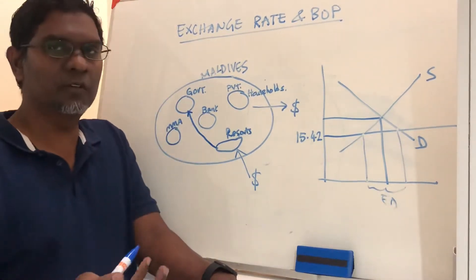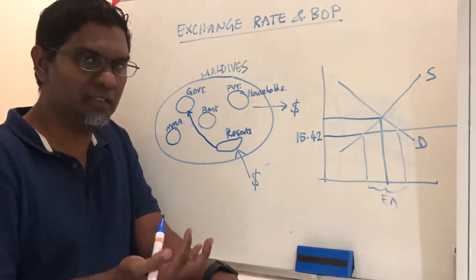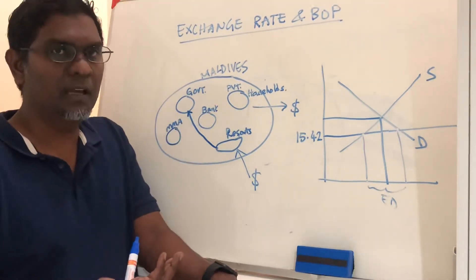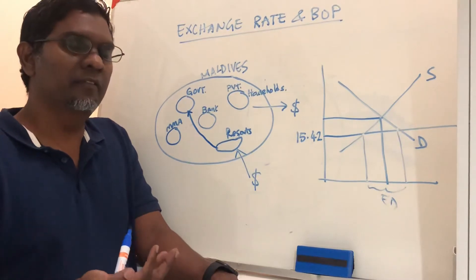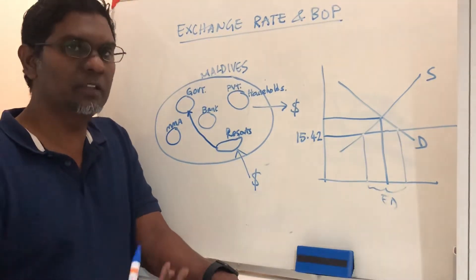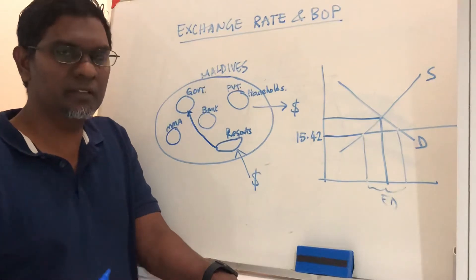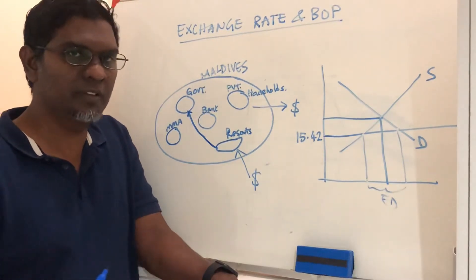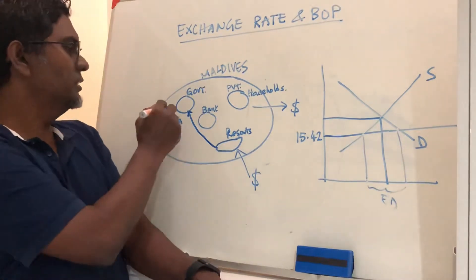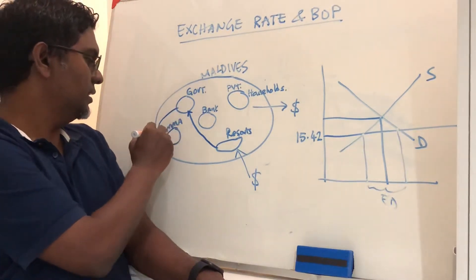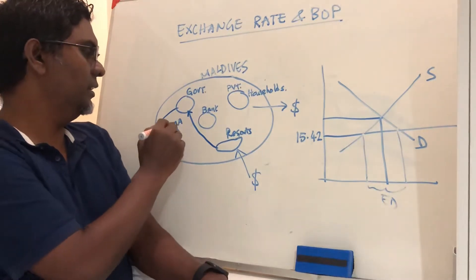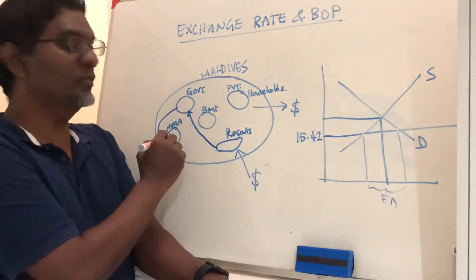When the tourism industry — the resorts and guest houses — pay the government the TGST, green tax, and other forms of taxes, US dollars flow from the private sector to the government. The government then converts those US dollars into Maldivian rufiya at the MMA.